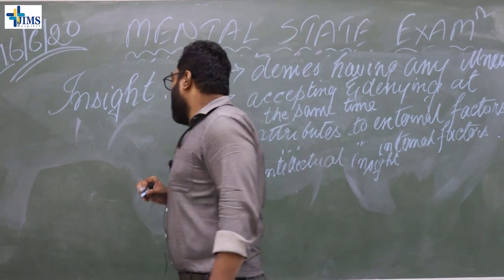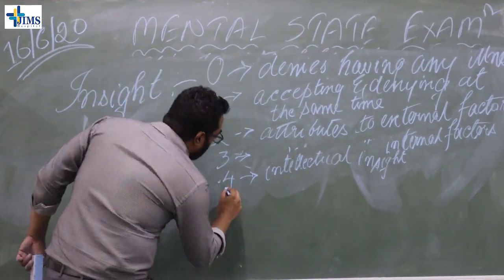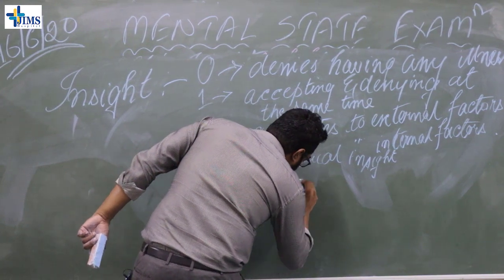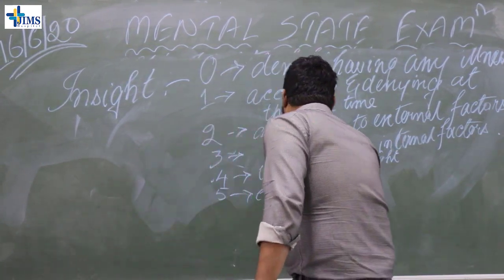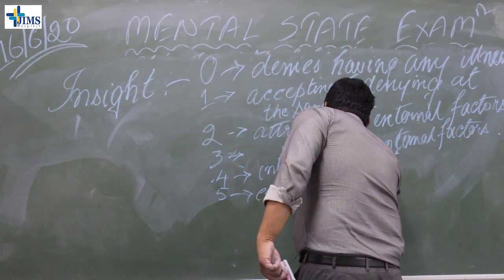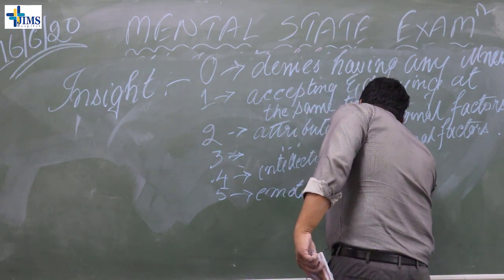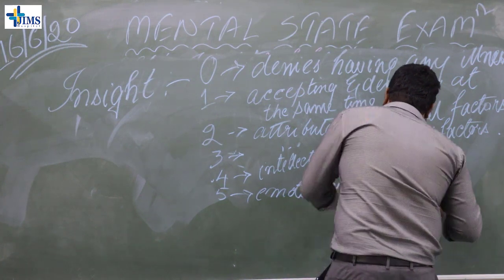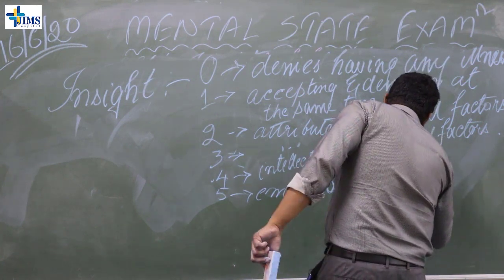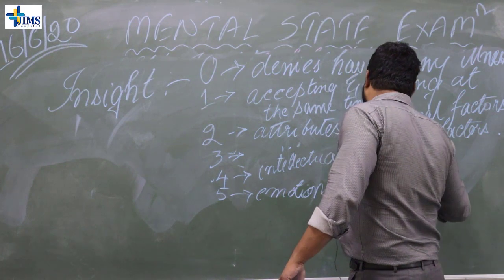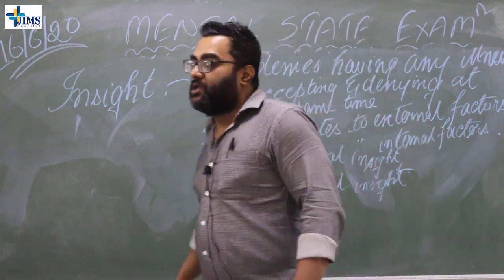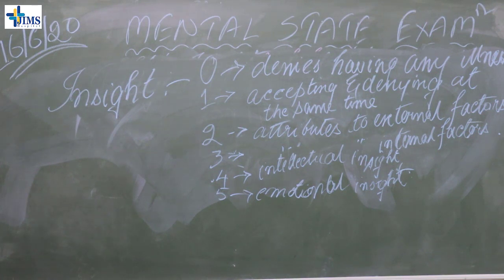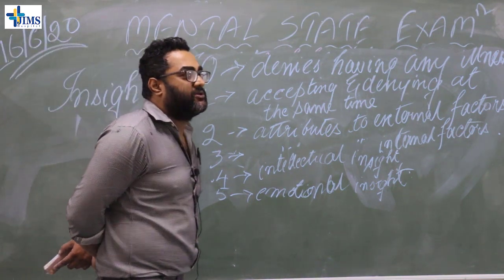Insight level 5 is total emotional insight. When we say the patient has reached stage 5, we say the patient is almost cured of the illness and we can think of tapering down the medicines. These are the 6 stages of insight and this is how we perform the mental state examination of a patient.